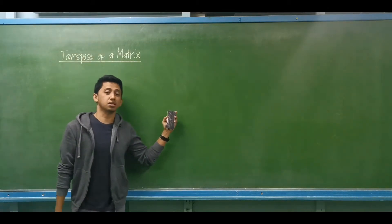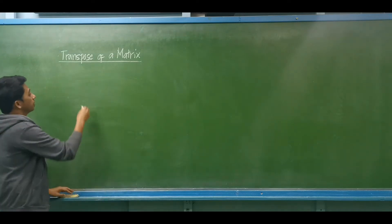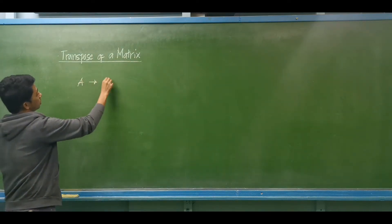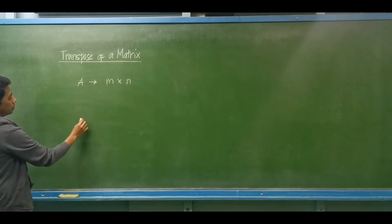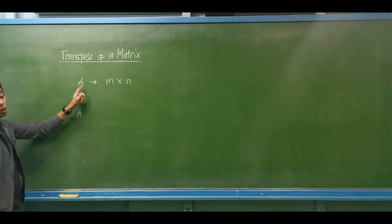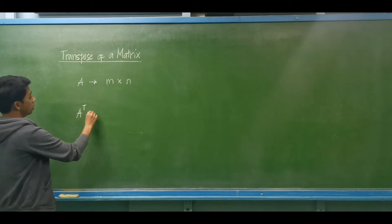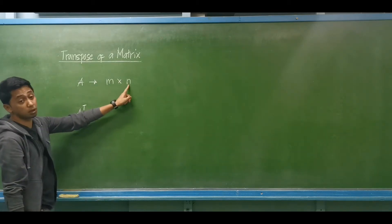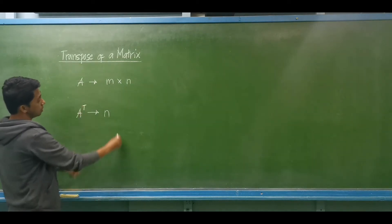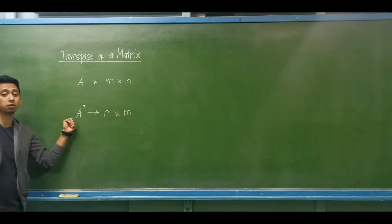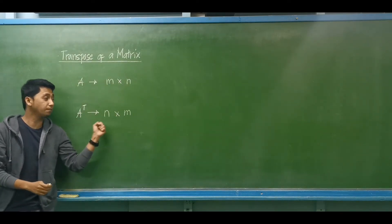Today we are going to discuss the transpose of a matrix. We have matrix A with M rows and N columns. To obtain the transpose of matrix A, written as A-transpose, the columns from the original matrix will become the rows, while the rows from the original matrix will become the columns. All we have to do is interchange the rows and columns.